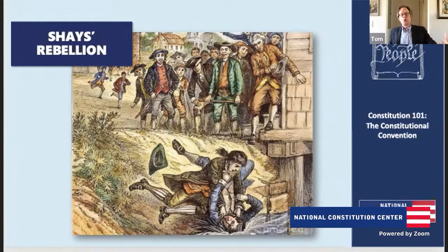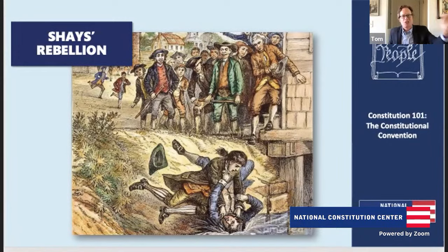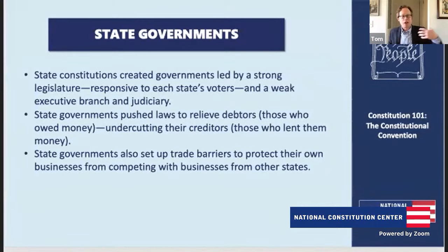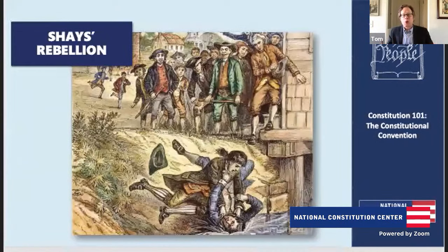The founding generation was also responding to their experience under state constitutions. When the founders looked at these state constitutions, they saw governments creating too-powerful legislative branches with not enough power to the executive and judiciary — governments too closely tethered to the people and making lousy decisions. So we have a weak Articles of Confederation, flawed state governments, and then we see this explosion — the threat of mob violence in Shays' Rebellion. Shays' Rebellion is in late 1786, with farmers in western Massachusetts. Daniel Shays — a 39-year-old farmer and Revolution veteran who fought at Lexington and Bunker Hill.